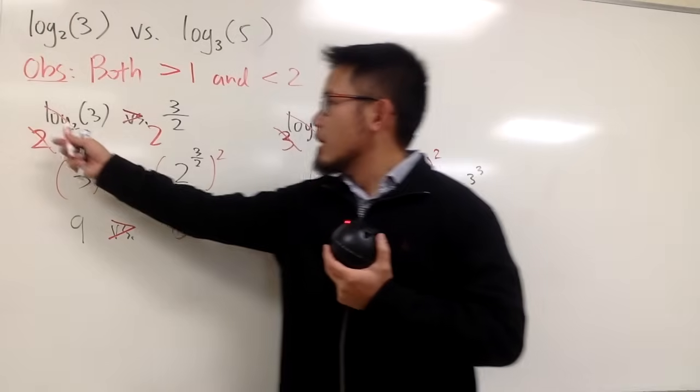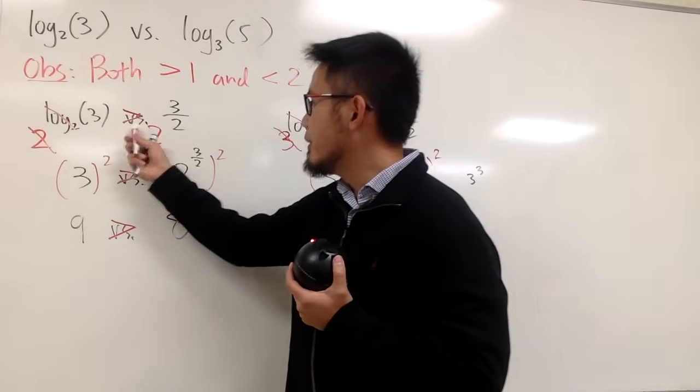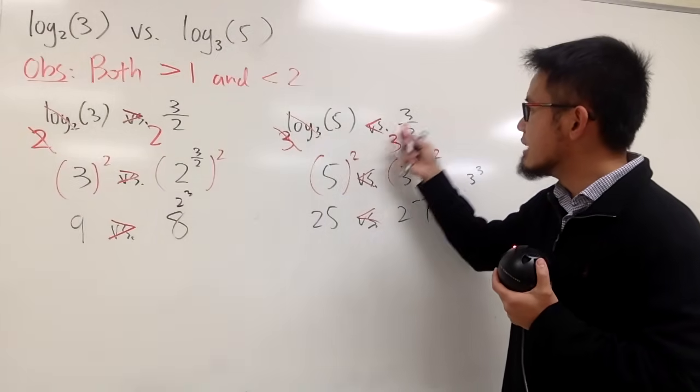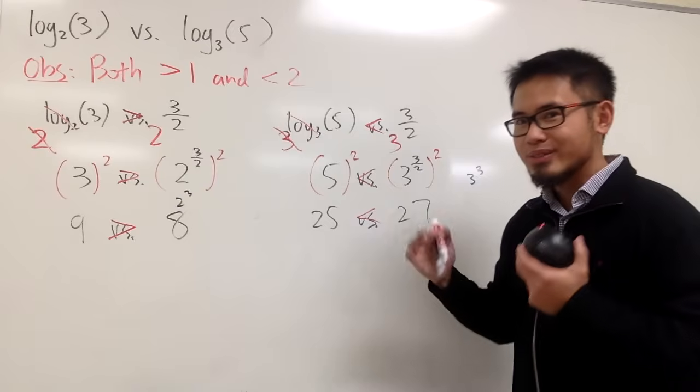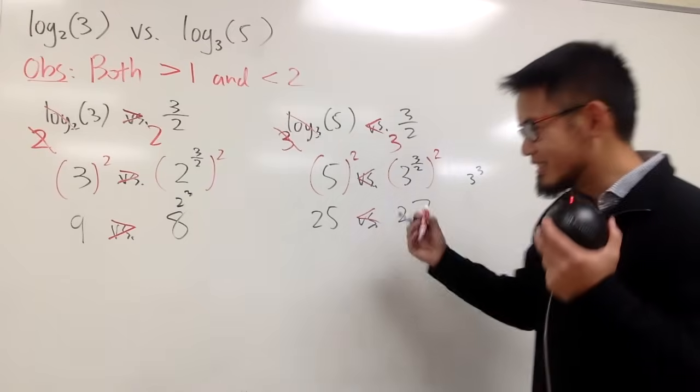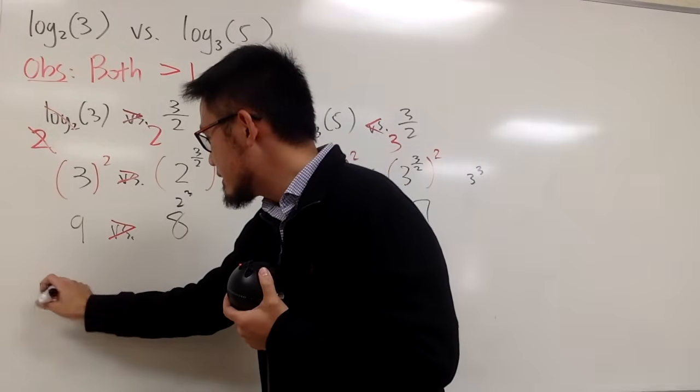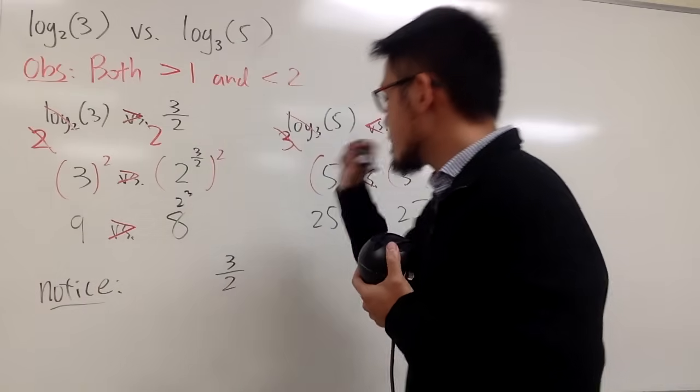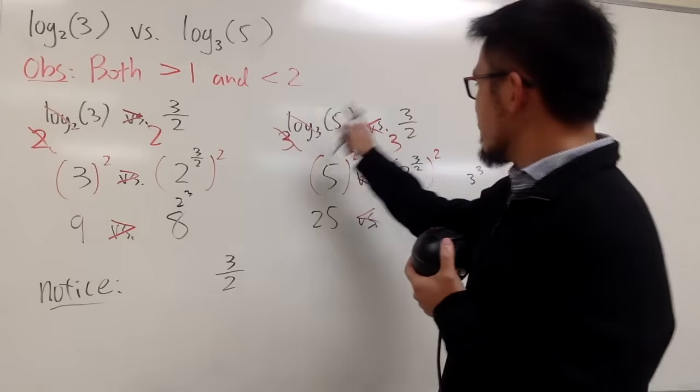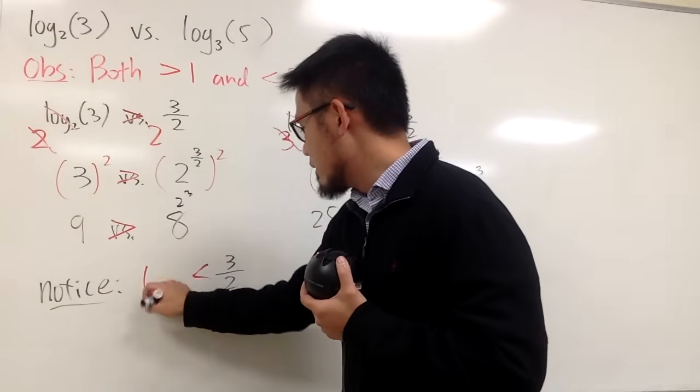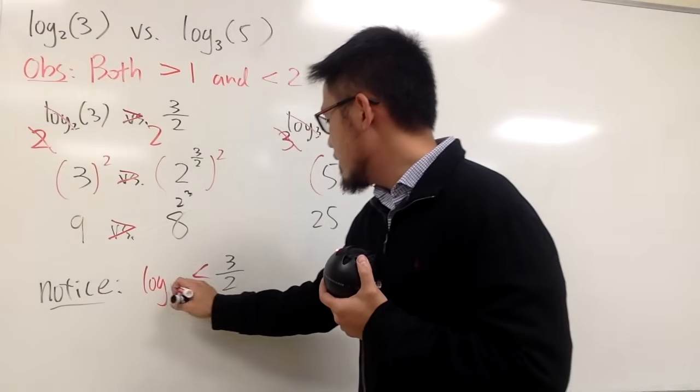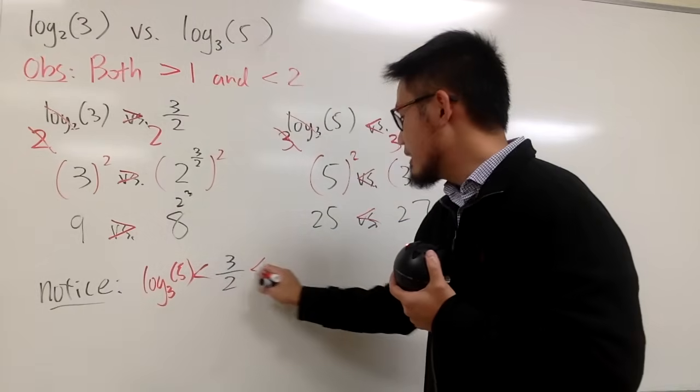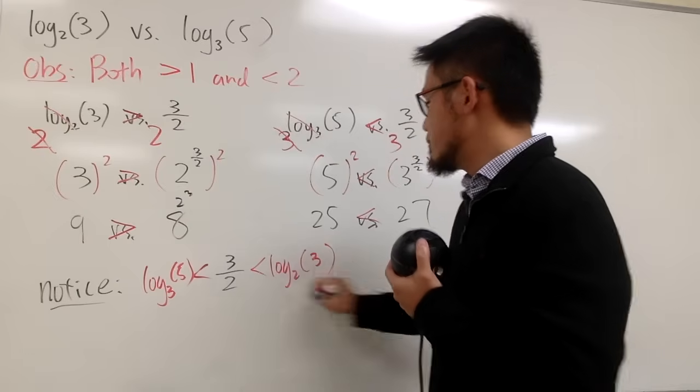Log base 2 of 3 is bigger than 3 over 2. But log base 3 of 5 is less than 3 over 2. So, finally, I can draw a conclusion. So, notice, let me just put down 3 over 2 in the middle. And the smaller number, which is this, log base 3 of 5. And the bigger number is that, log base 2 of 3.